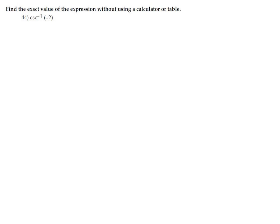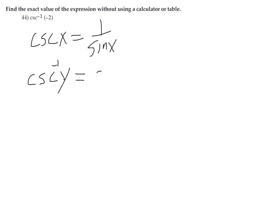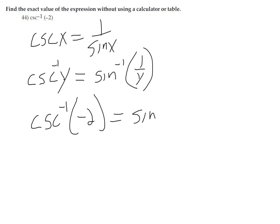Next question: find the exact value of the expression without using a calculator or table. Arc cosecant. The relationship with cosecant: cosecant x equals 1 over sine x. However, arc cosecant of y is arcsine of 1 over y. They both have a reciprocal nature going from cosecant to sine. When you have the regular function cosecant, that equals 1 over sine. But when you have the arc cosecant, the inside is what flips. So arc cosecant of negative 2 equals arcsine of negative 1 half.